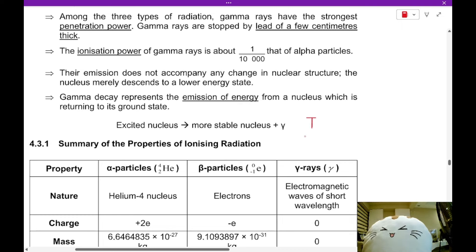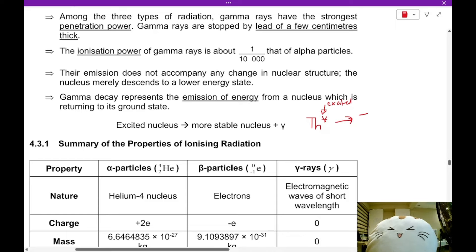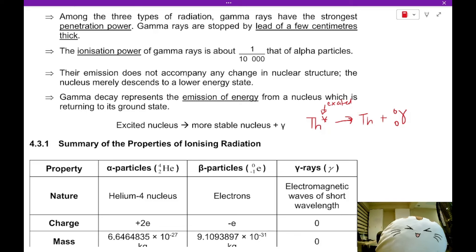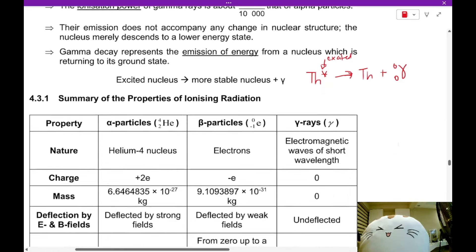One example of gamma radiation: excited thorium (indicated by an asterisk) becomes normal thorium plus gamma radiation. Gamma radiation also has a value of 0 for nuclear number and 0 for charge. This is an example of a gamma decay equation.